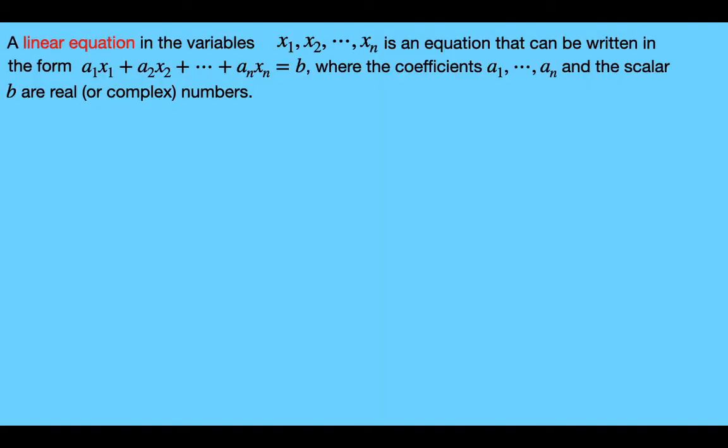A linear equation in the n variables x sub 1, x sub 2, up to x sub n is an equation that can be written so that the sum of the n variables multiplied by the n coefficients — where the coefficients are a sub 1 up to a sub n — is equal to some scalar b. The coefficients a sub 1 to a sub n and the scalar b are real numbers.